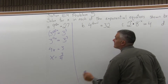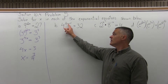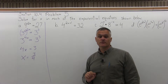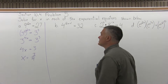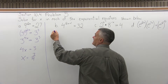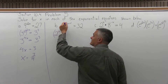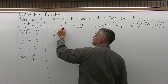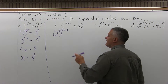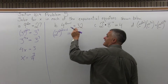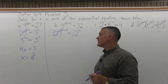Part B: solve the exponential equation 4 to the 2x plus 1 power equals 32. First, make the base the same on both sides — both sides can be written as 2 to some power. So change 4 to 2 squared, still to the 2x plus 1. And 32 on the right side is 2 to the 5th. So 2 to the 5th is still 32 — I've just changed the way it looks.